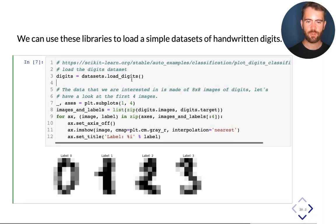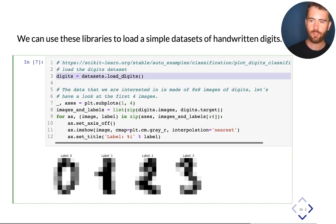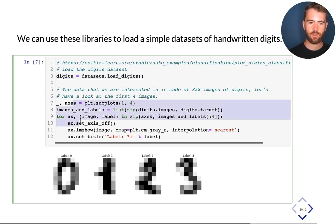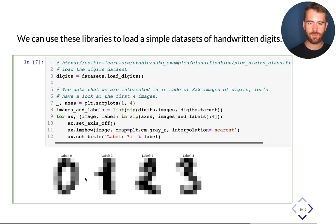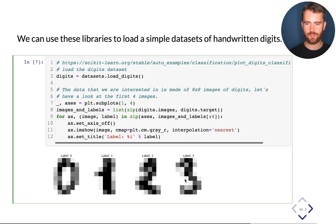Here I'm using the scikit-learn datasets module to load a dataset of digits. Using a bit of Python to display four digits on the screen — this is a toy dataset that contains eight-by-eight pixel images of handwritten digits. Here I just showed you four examples, four digits from this dataset.